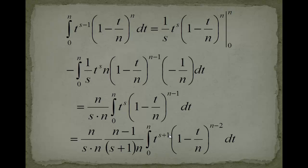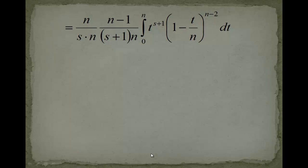Actually what happened else is that we erased this t to the s and we reduced this part by 1. And we will just repeat this. Now try again to guess what will happen from integrating this we will get an s plus 2 in the denominator. From differentiating this we will get an n minus 2 in the numerator and an n in the denominator.